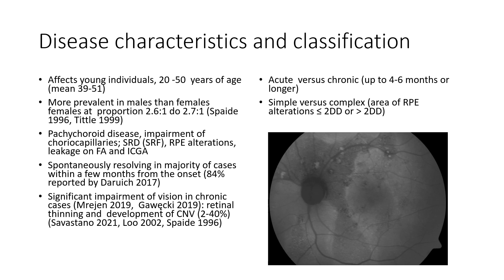It affects mainly young individuals, with the mean age in the fifth decade of life. It's more prevalent in males than females. CSC belongs to a spectrum of pachychoroid disease, which involves increased choroidal thickness, impairment of choriocapillaris, presence of subretinal fluid, RPE alterations, and leakage on FA and ICGA.